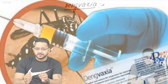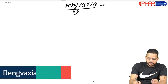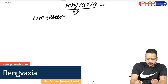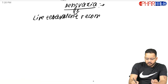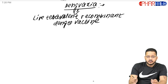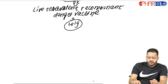Let's begin. Dengvaxia is a live tetravalent recombinant vaccine which has been approved by the FDA in 2019.